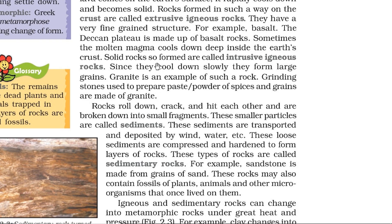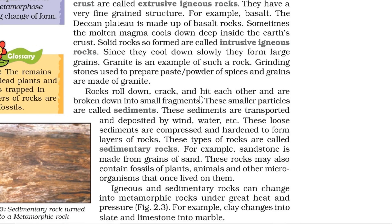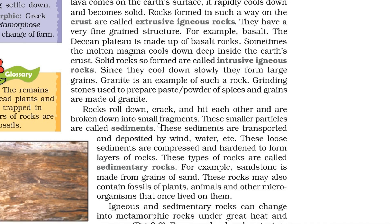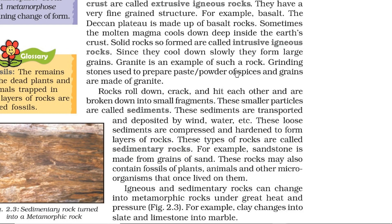Sometimes the molten magma cools down deep into the earth crust. The solid rocks formed are known as intrusive igneous rocks, and since they cool down slowly — as against extrusive igneous rocks — they form large grains. Granite is an example of such a rock. Grinding stones used to prepare paste, powder, or spices and grains are made up of granite.